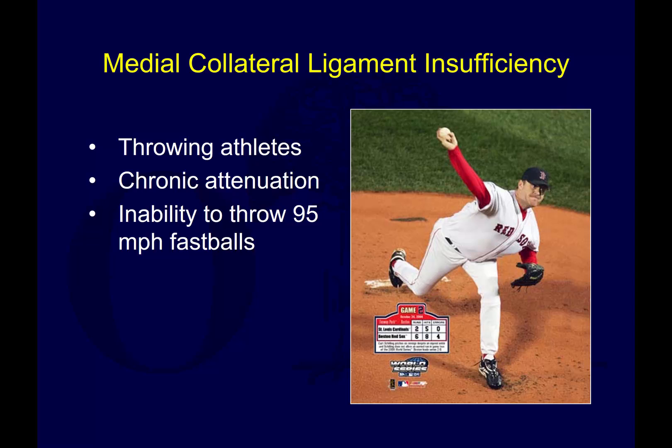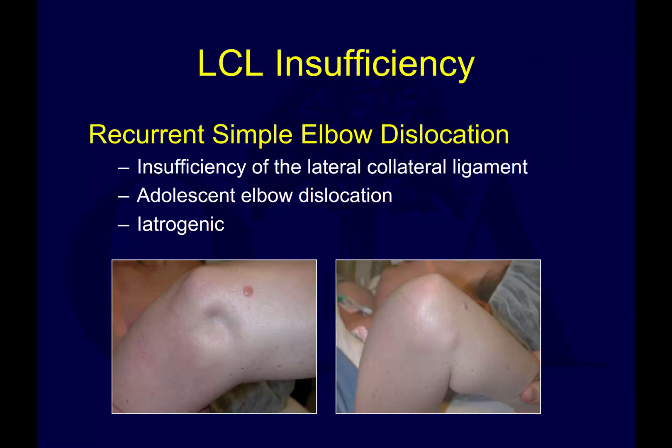A word about medial collateral ligament insufficiency: this can occur with elbow dislocations, but it's more often seen as an overuse injury from microtrauma and repetitive valgus stress, typically in baseball pitchers — an extension of what you see with little leaguer's elbow. These are treated conservatively, but in high-performance throwers, this can be treated with so-called Tommy John surgery, which has been successful in getting many athletes back to pitching at near their pre-injury level.